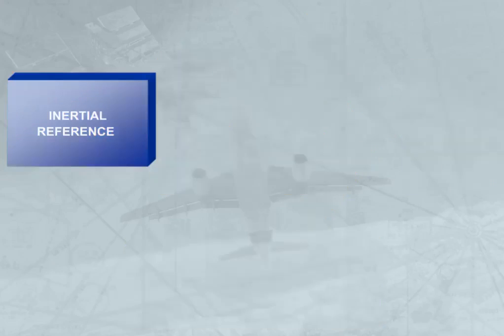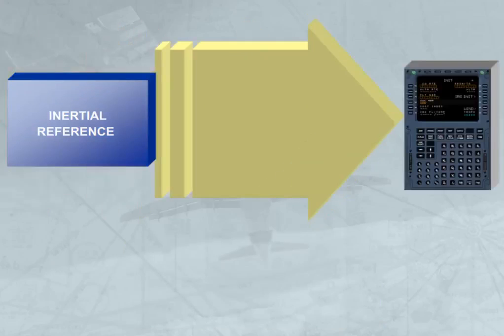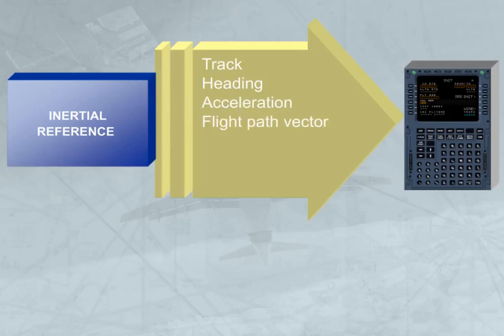The IR part provides inertial data to the FMGC, EFIS, and other users. The inertial data provided includes track, heading, acceleration, flight path vector, aircraft position, ground speed, and attitude.